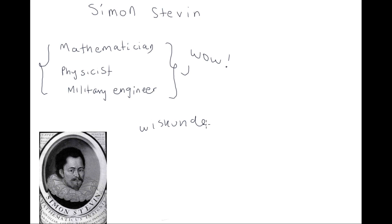Wiskunde, that is, the knowledge of what is certain, was not a loanword from Greek, but a calque via Latin. Now, we are going to discuss some of his contributions to mathematics.